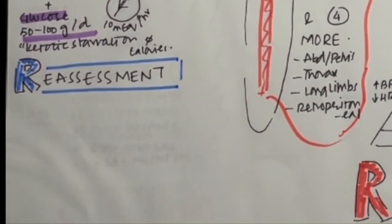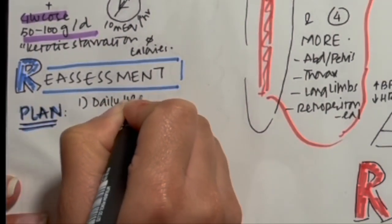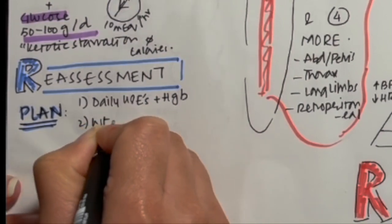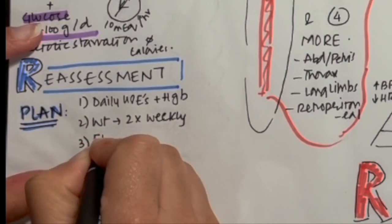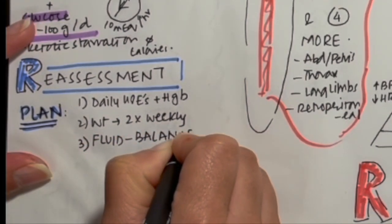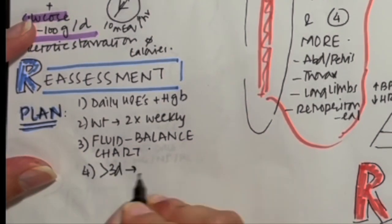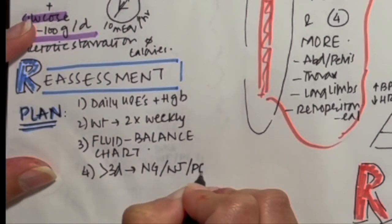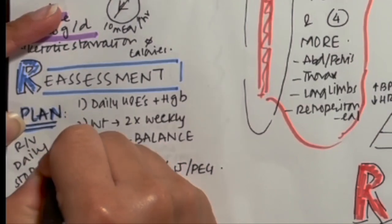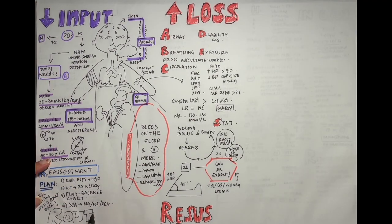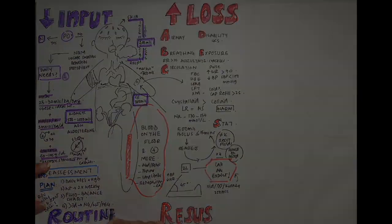In your plan, write for a daily review, daily urea and electrolytes, and full blood count to measure their hemoglobin. Do weights twice weekly, keep a fluid balance chart of input and output, and if someone has been on fluids for more than three days, think about placing a nasogastric, nasojejunal, or PEG tube. Remember to review daily and to write the stop and start date on your prescription. That wraps up routine maintenance fluids, and in another video we'll go over examples.